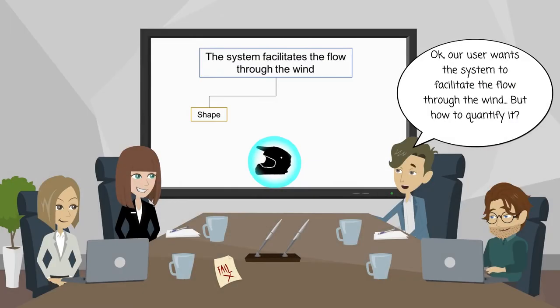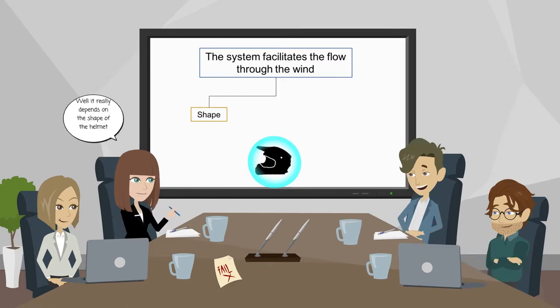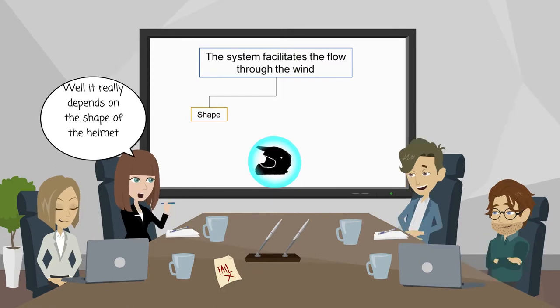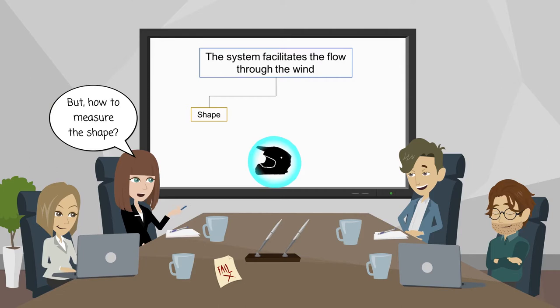Okay, our user wants the system to facilitate the flow through the wind. But how to quantify it? Well, it really depends on the shape of the helmet. But how to measure the shape?